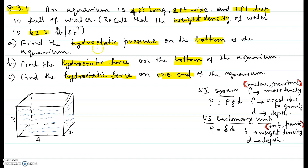The first part of the question is asking us to find the hydrostatic pressure on the bottom of the aquarium. Pressure at the bottom of the aquarium is given as delta times D. Notice here I have written the formula in two different ways. If the problem is in the SI system where measures are meters and forces are in Newtons, then we use the formula rho times G times D, where rho is the mass density of the liquid, G is the acceleration due to gravity, and D is the depth.